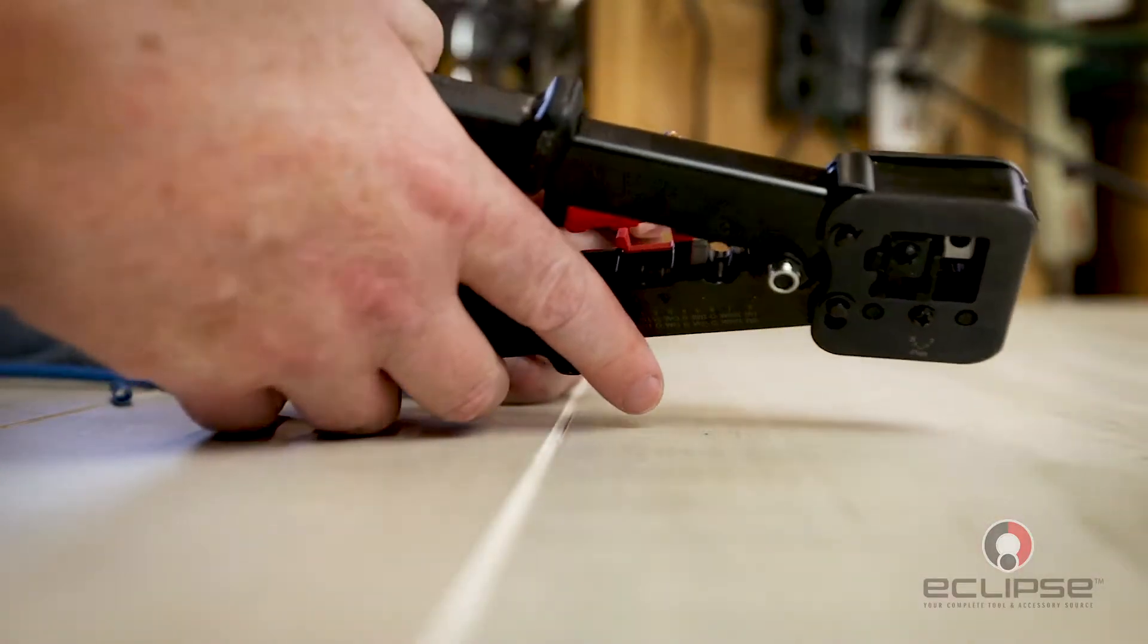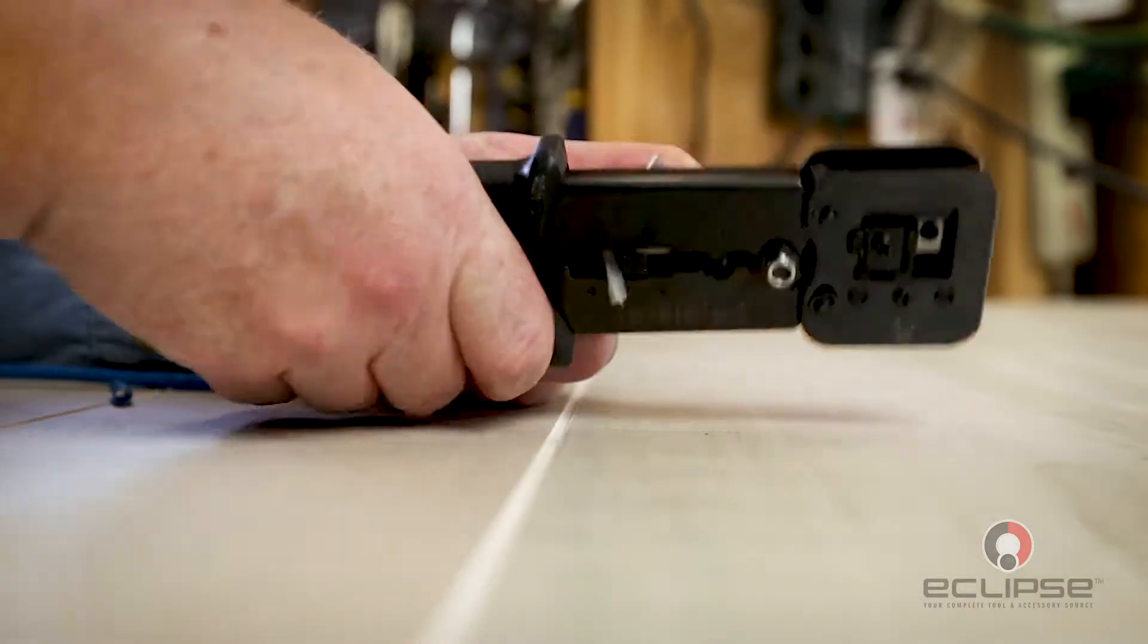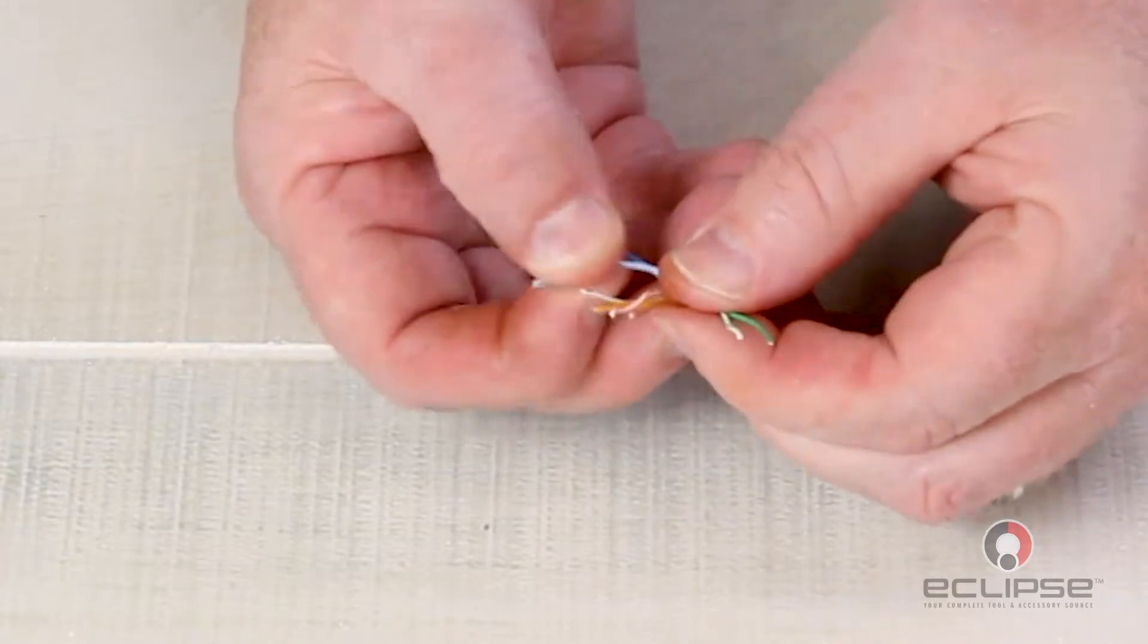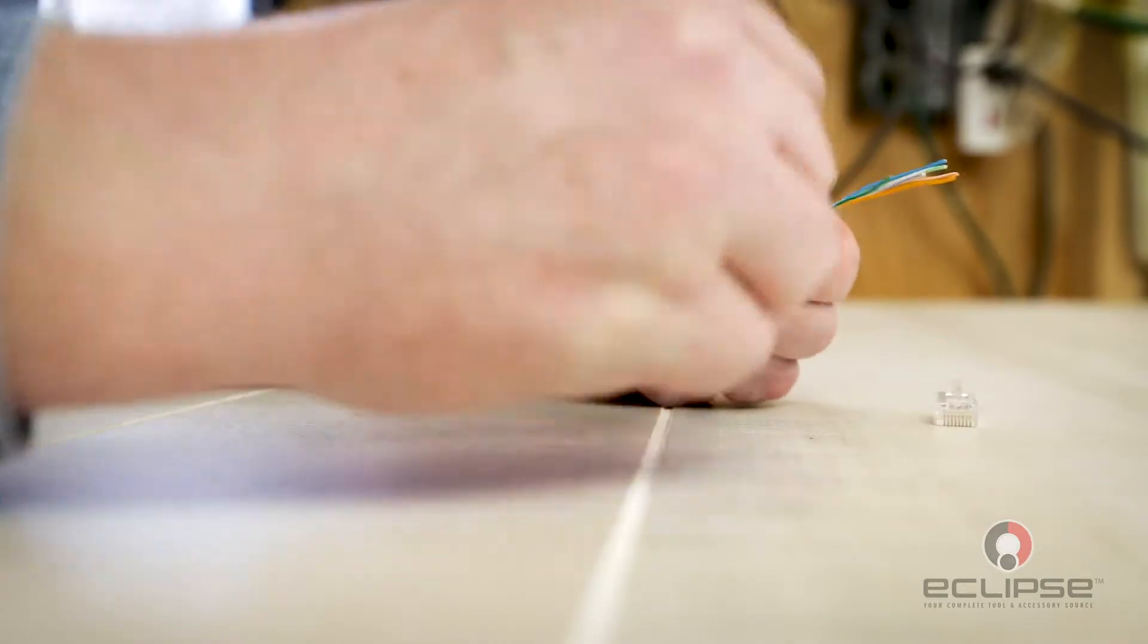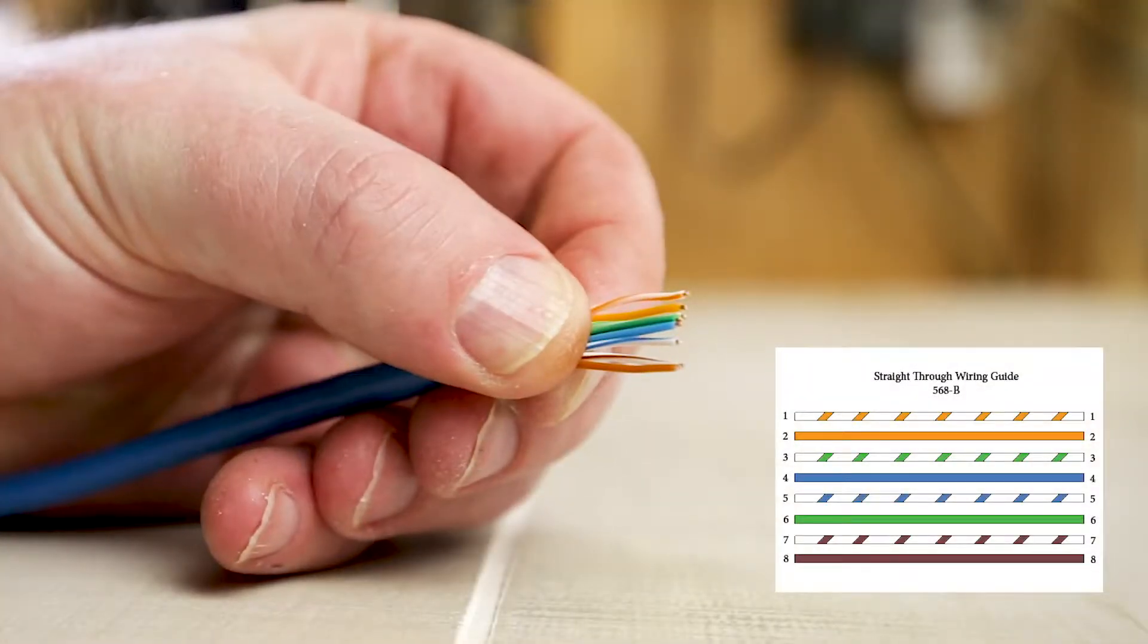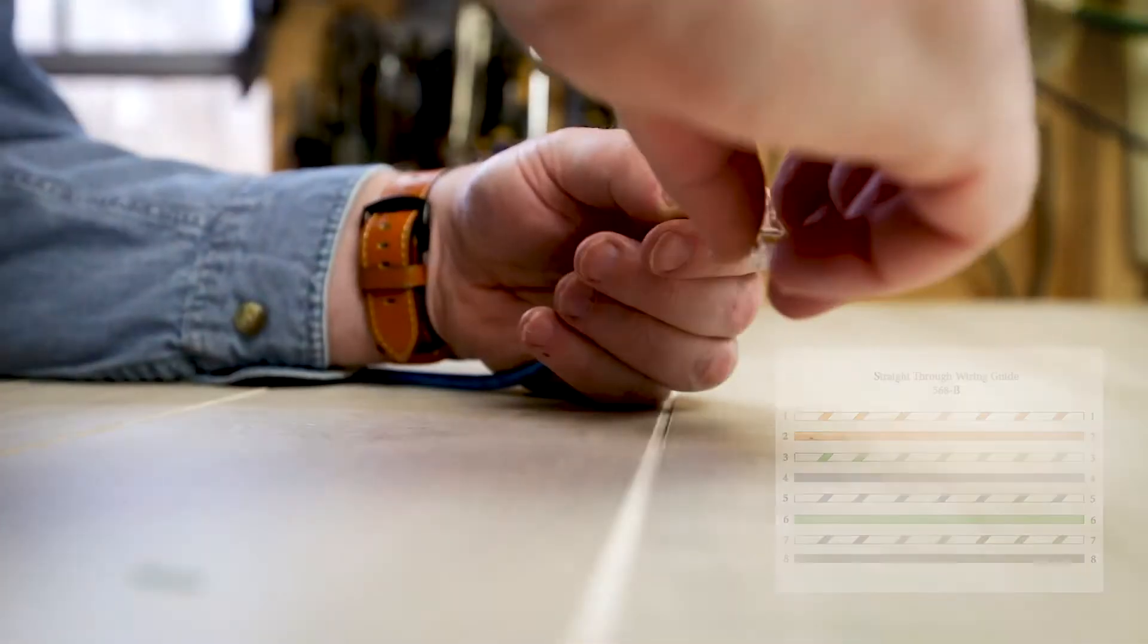Trim the exposed interior insulation and unwind your twisted pairs. Now you need to sort your wires according to your diagram. We're using wire diagram B. While holding the wires in order, feed the wires through the connector until the connector is over the jacket of the cable.